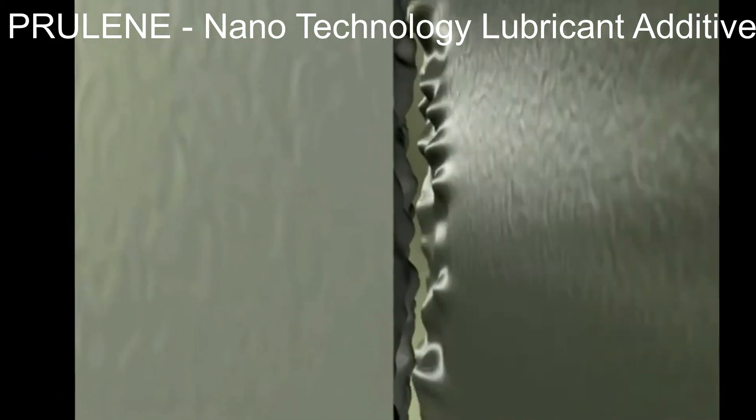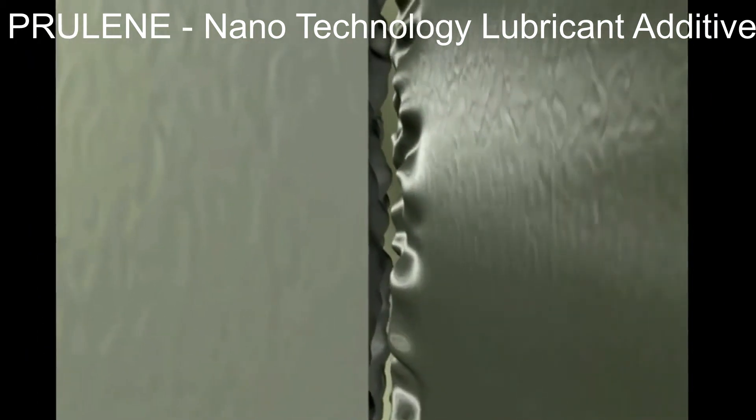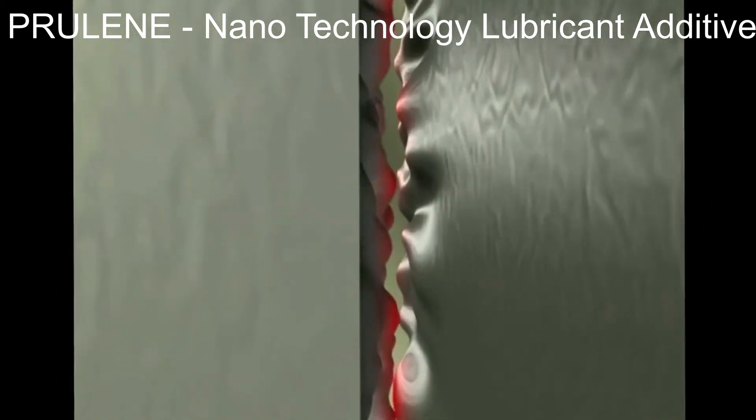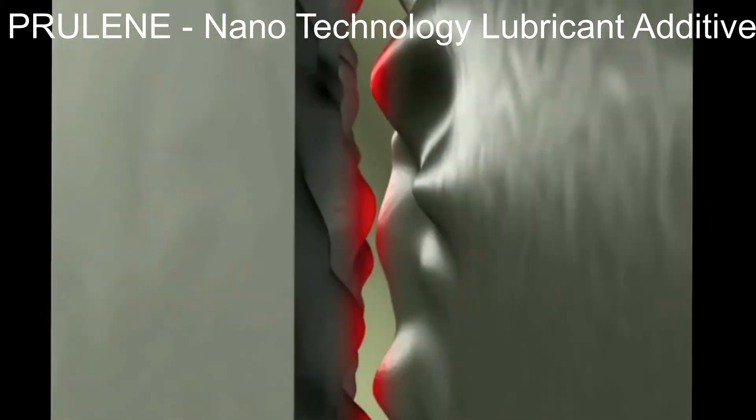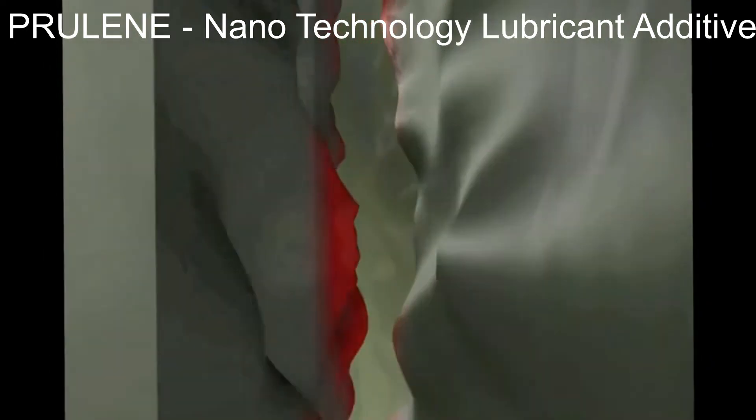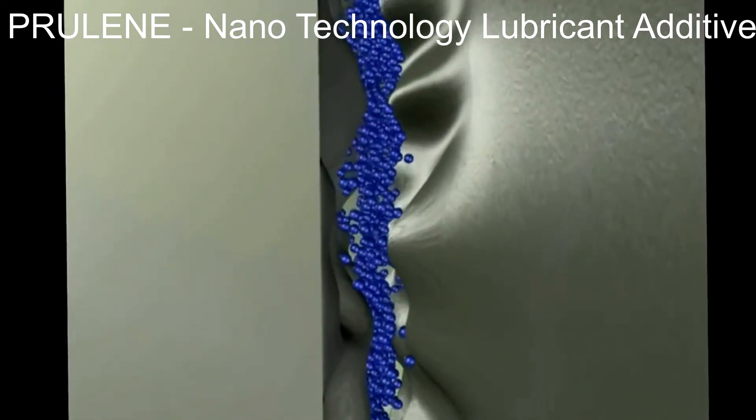These metallic surfaces are not smooth at the microscopic level, but rather contain various peaks and troughs known as asperities. When such microscopic peaks come into contact, wear and heat are produced, which damages the system and often leads to mechanical failure.